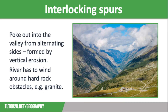V-shaped valleys are made of hard rock such as slate and granite. This rock is resistant to erosion but it is subject to freeze-thaw weathering, where water gets into cracks, freezes and expands, and then thaws again. This weakens the rock over time, causing fragments to break loose and fall down the slopes creating scree slopes. Once this weathered material reaches the valley floor it will be carried away by the river.